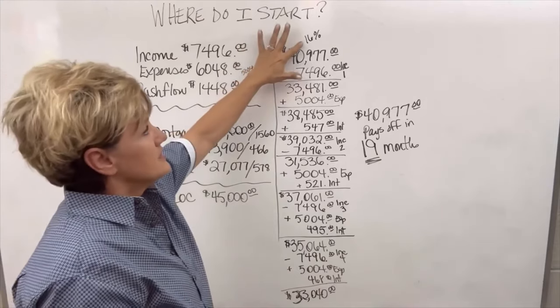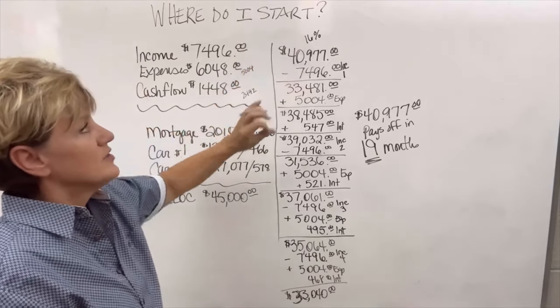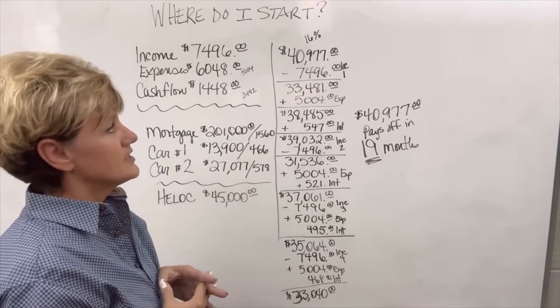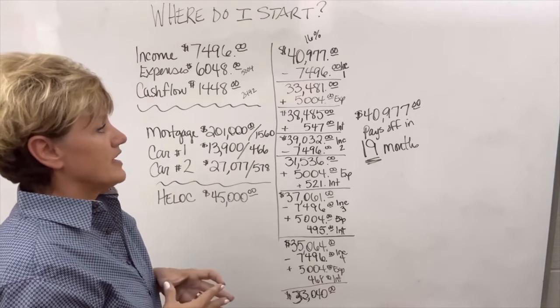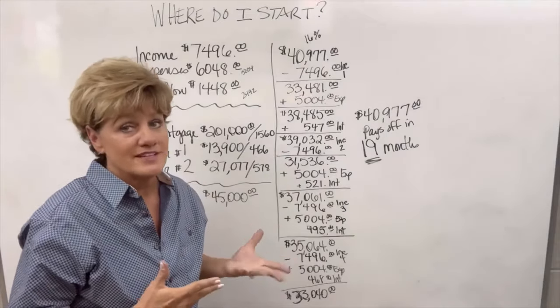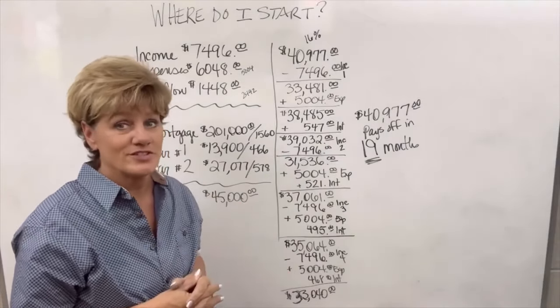We're going to say this HELOC is at 16% because the paperwork I saw showed that it's a little over 15%. So I'm going to go with that. Just to leave room for error in the event that it's 7%, then hey, guess what? That's just more cushion, right?